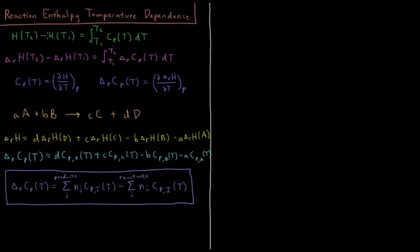The enthalpy at temperature 2 minus the enthalpy at temperature 1 is the integral from T1 to T2 of the constant pressure heat capacity integrated with respect to temperature. We'll remind ourselves that the constant pressure heat capacity is the partial derivative of the enthalpy with respect to temperature at constant pressure.